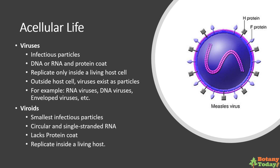Viroids are infectious particles made up of circular and single-stranded RNA. Viroids are the smallest known infectious particles and do not have a protein coat. Like viruses, viroids can also replicate inside a living host.